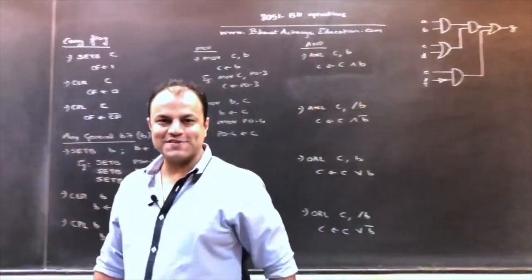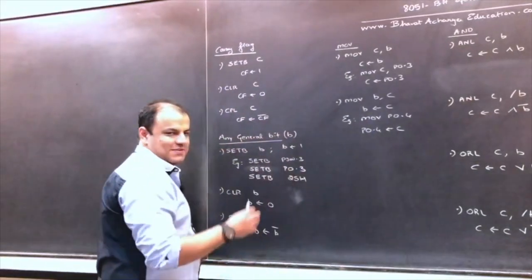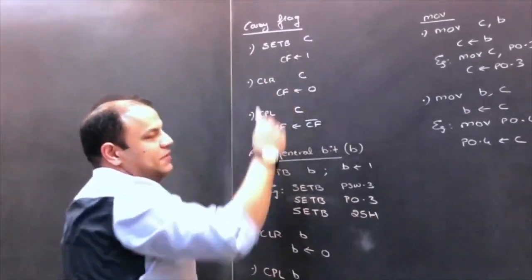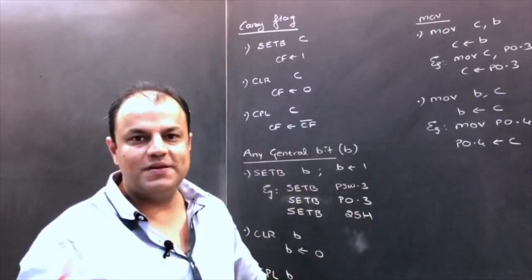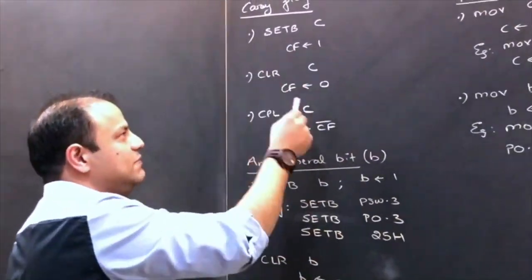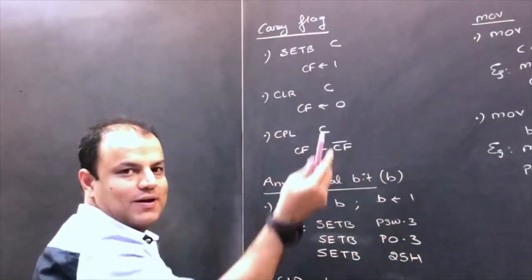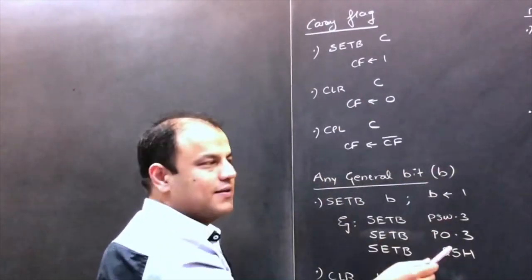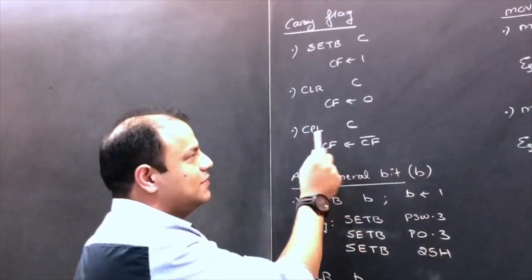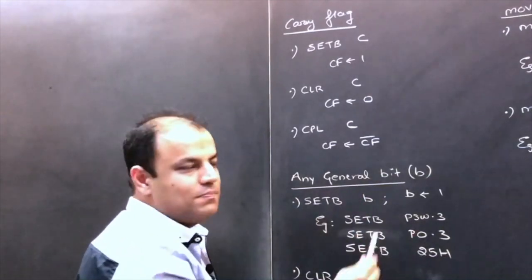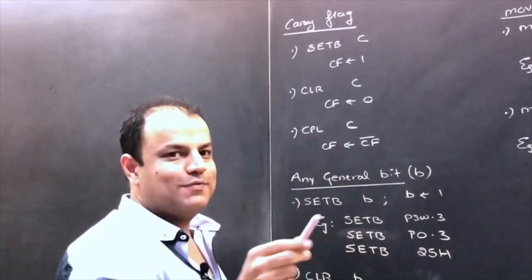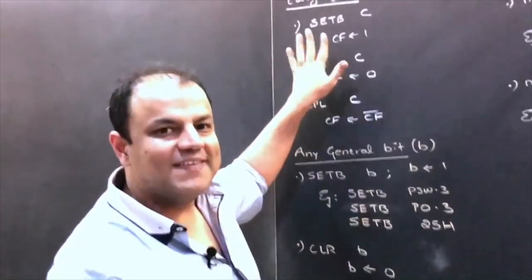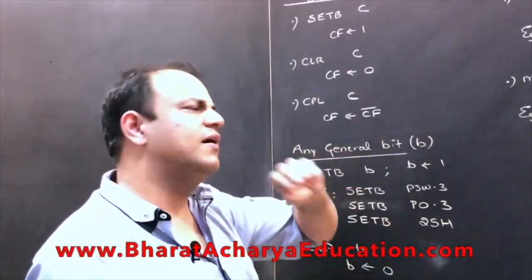We begin with our first instruction. The instructions are very simple; the use is more interesting. SETB C — set bit, C means the carry flag — will make the carry flag 1. CLRC, clear the carry flag, will make carry flag 0. CPLC, complement the carry flag, carry flag will become carry flag bar: if it was 1 it will become 0 and vice versa. So we have set, clear, and complement for the carry flag.